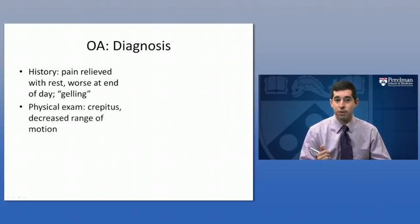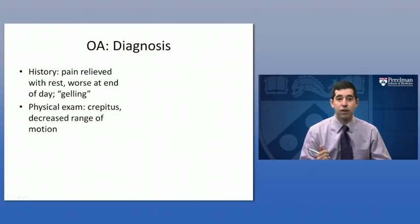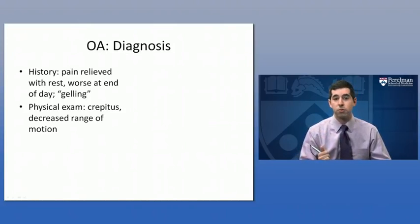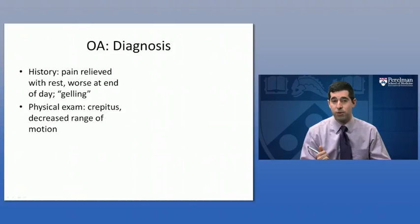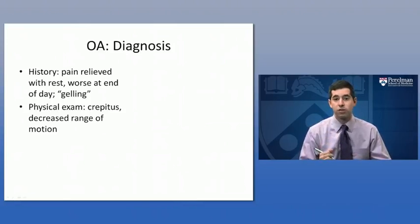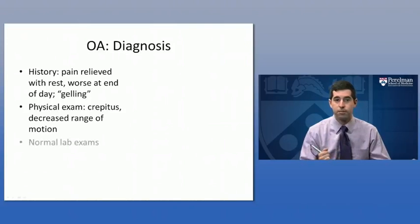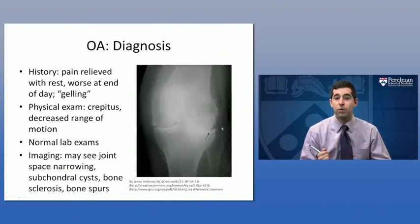The physical exam may show crepitus — essentially a creaking or crunching sound that occurs within the joint when moving it through its normal range of motion. This is contributed to by the destruction of the hyaline cartilage, the smoothness of the bone, and those osteophytes and joint mice we mentioned before, all contributing to this sound and feeling of crunching. There is also usually a decreased range of motion, partly because of the pain and partly because of destruction to the joint. Usually osteoarthritis has normal lab exams in contrast to rheumatoid arthritis, and imaging may be done if the diagnosis is in doubt.